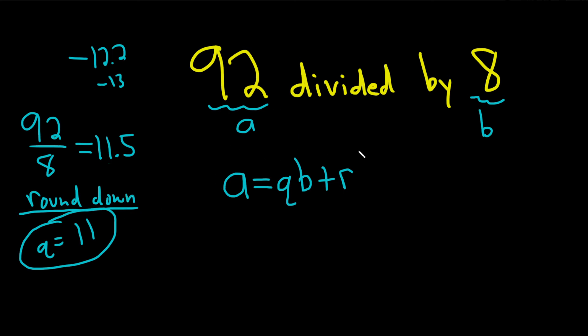Now to find the remainder you just take everything you have now and you plug it into your equation. So A is 92. Q is 11. So this is 11. And then B is 8. So times 8. And then plus R. What's our remainder?